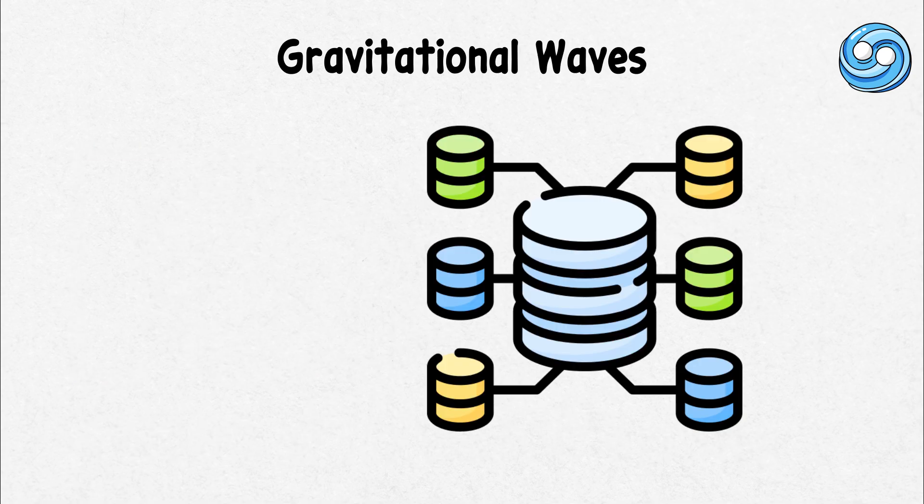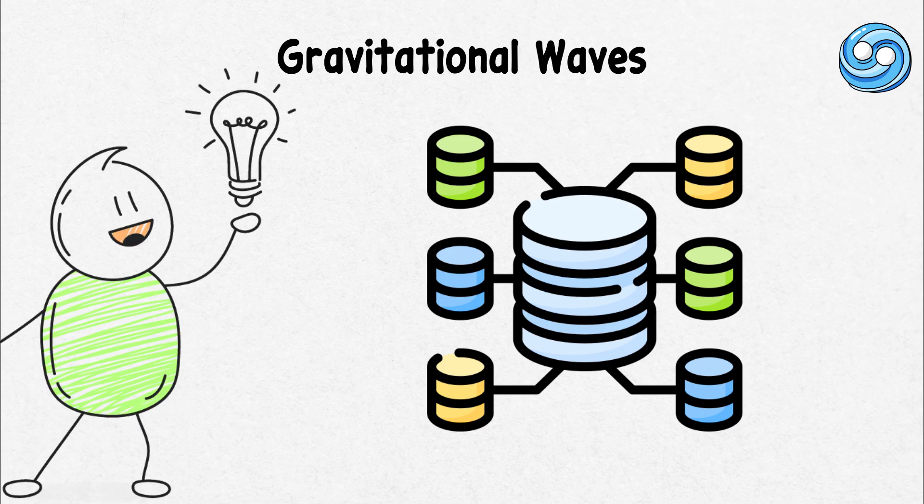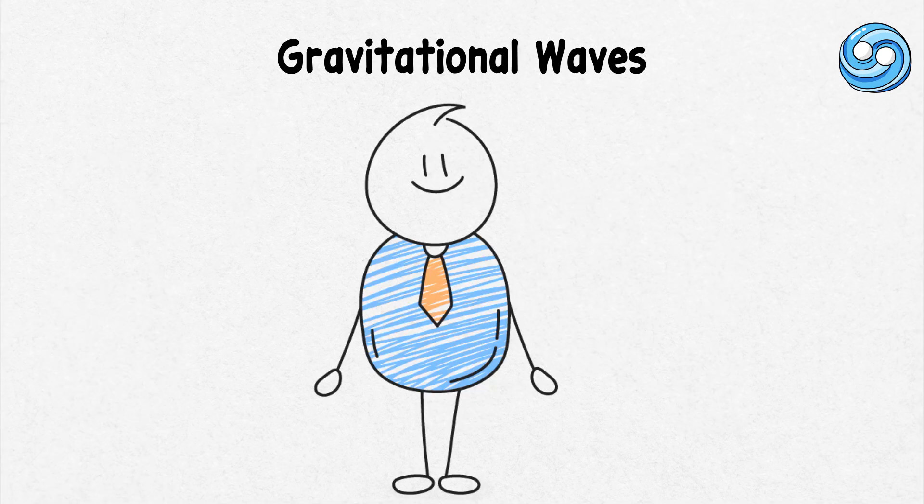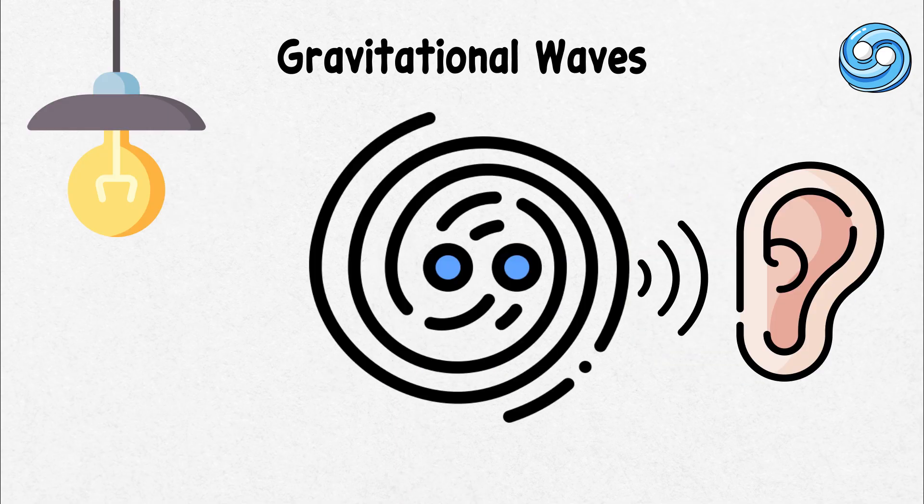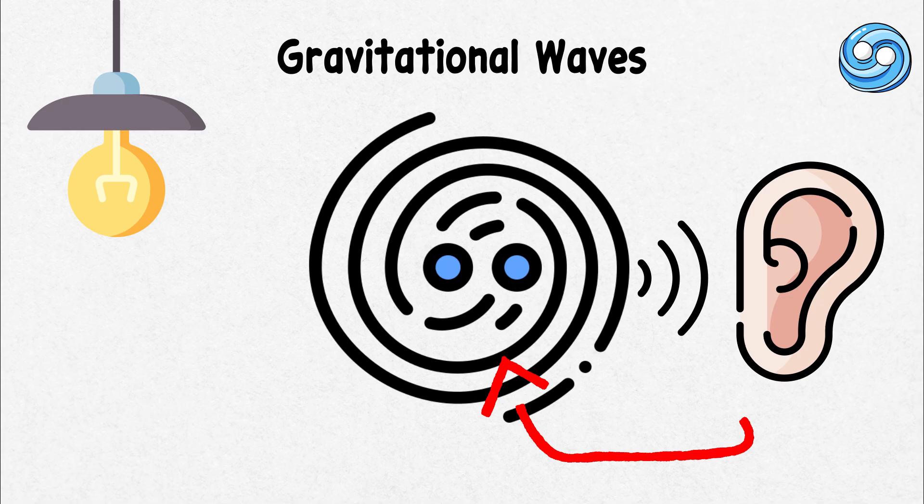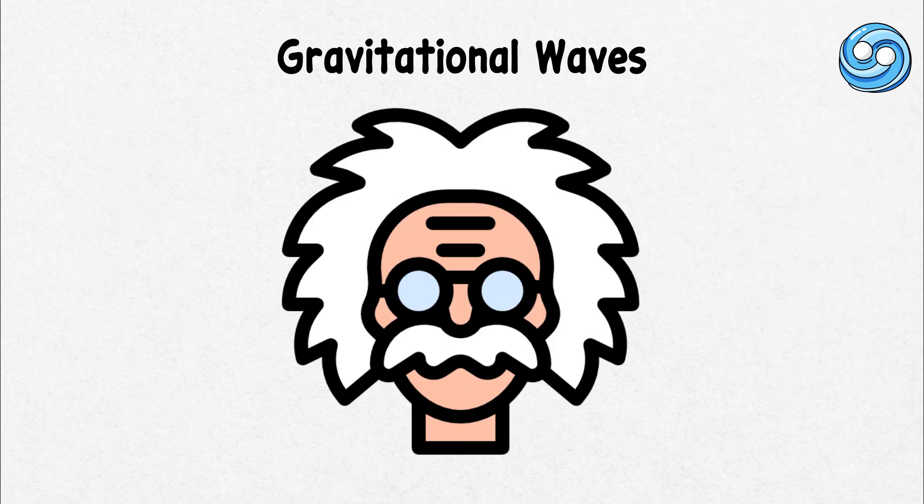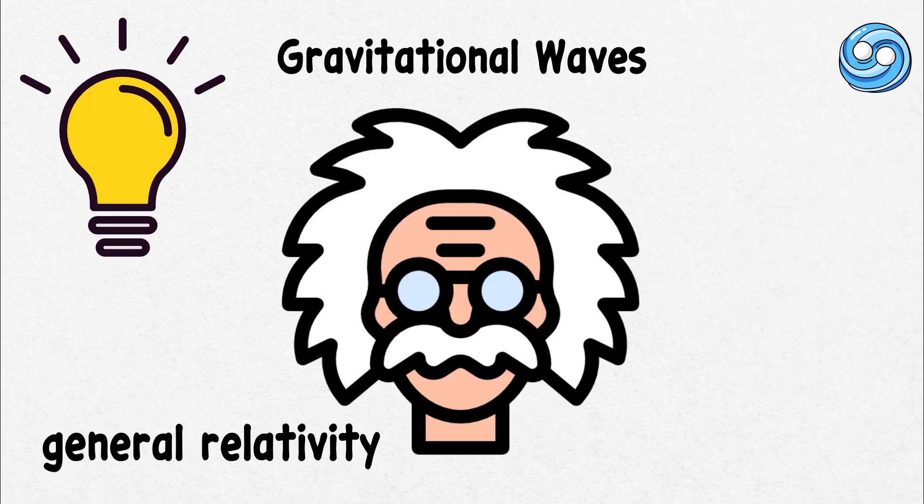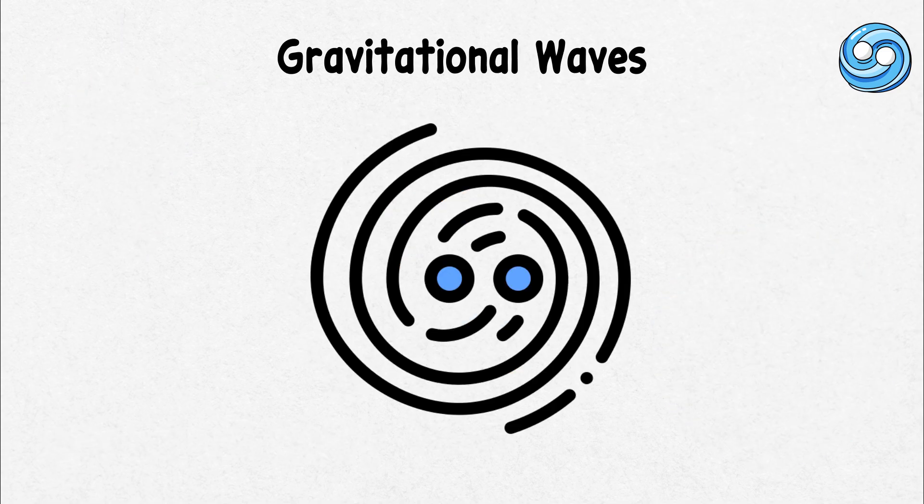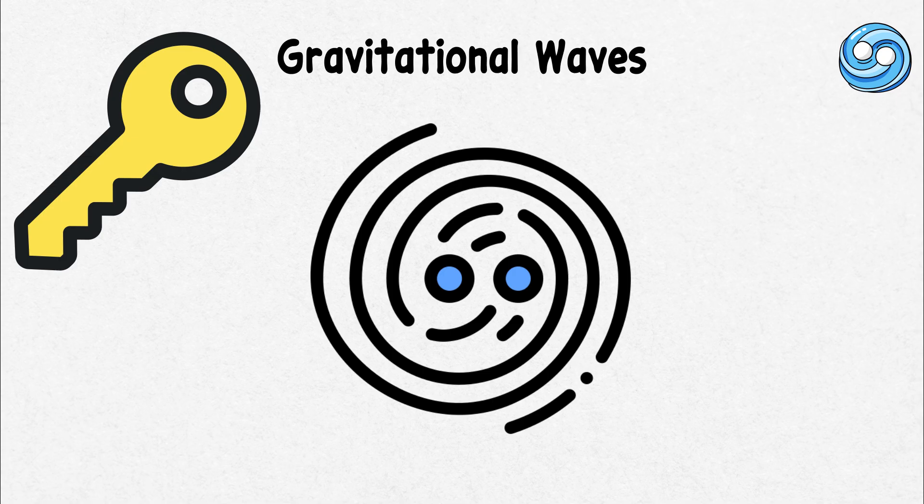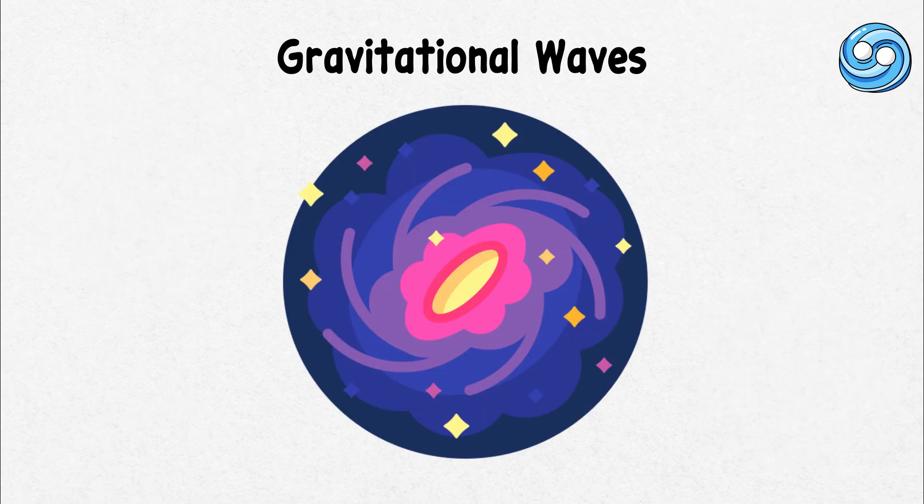The signature, a brief chirp in the data, sent waves of excitement through the scientific community. This discovery opened an entirely new way to observe the universe. Instead of just seeing it through light, we could now hear it through gravitational waves. It confirmed a key prediction of Einstein's theory of general relativity and provided a direct glimpse into the most violent events in the space. Gravitational waves have since revealed secrets about black holes, neutron stars, and the early universe, marking a new era in astronomy.